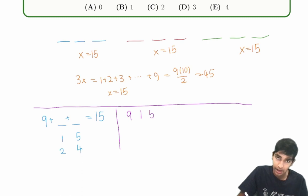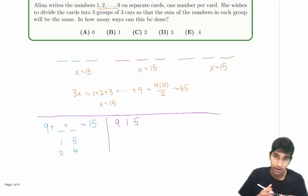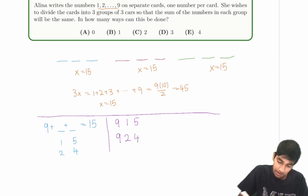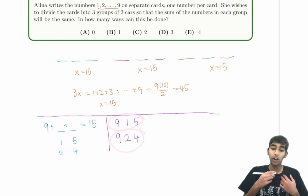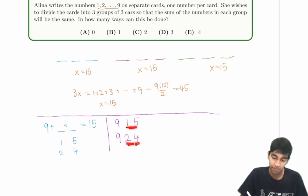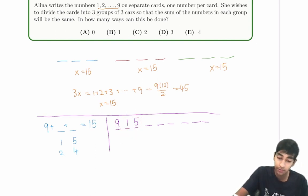9, 1, 5. Okay, so 9, 1, 5 and 9, 2, 4. Notice that the reason we did this is because 9 only has two cases. Because it's already so large, there isn't really much possibility for the other two numbers. So always try to focus on the most restrictive condition first. Okay, now let's talk about the first case, 9, 1, 5. And we have six other numbers. So notice that this sum is 15, but the other two triplets of three numbers must also sum to 15.